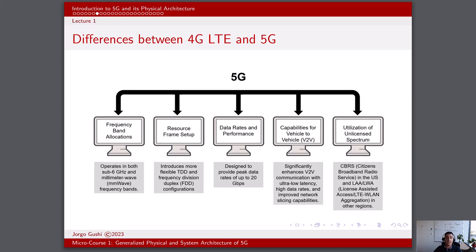In the context of the unlicensed spectrum, 5G introduces new technologies like Citizens Broadband Radio Service, or CBRS, in the United States, and LAA, or License Assisted Access, in other regions. These technologies allow 5G to utilize unlicensed spectrum bands, for example 5 GHz, alongside licensed bands, increasing the available capacity and improving the overall network performance.